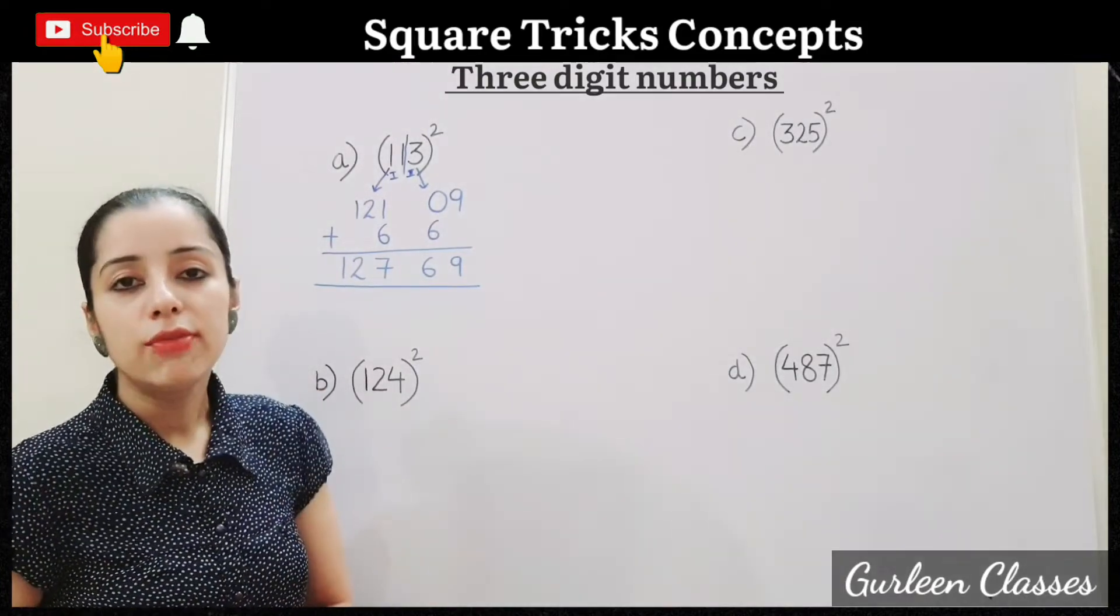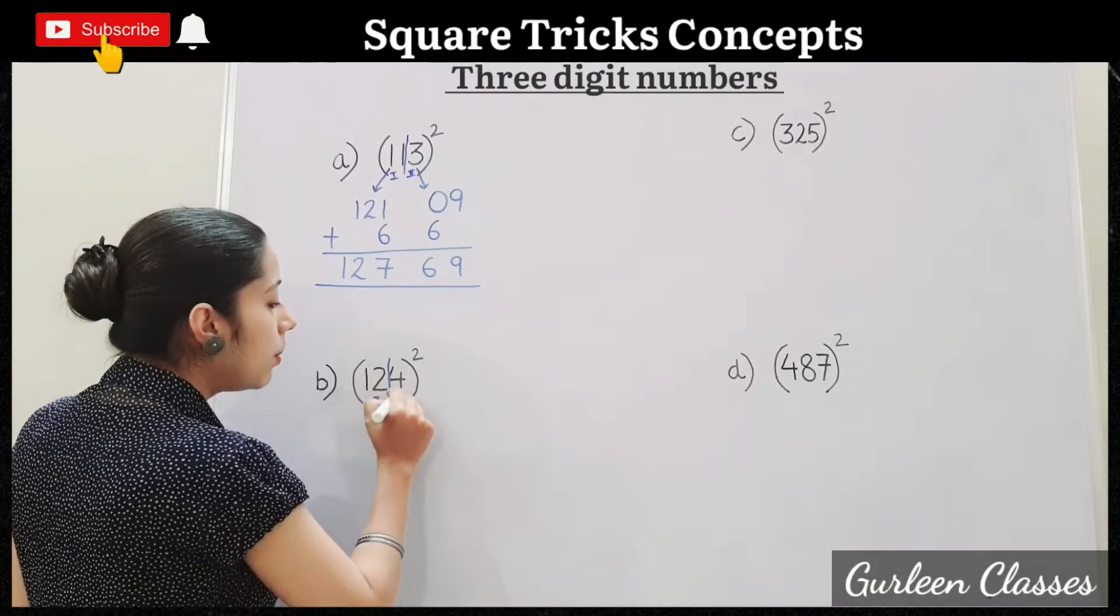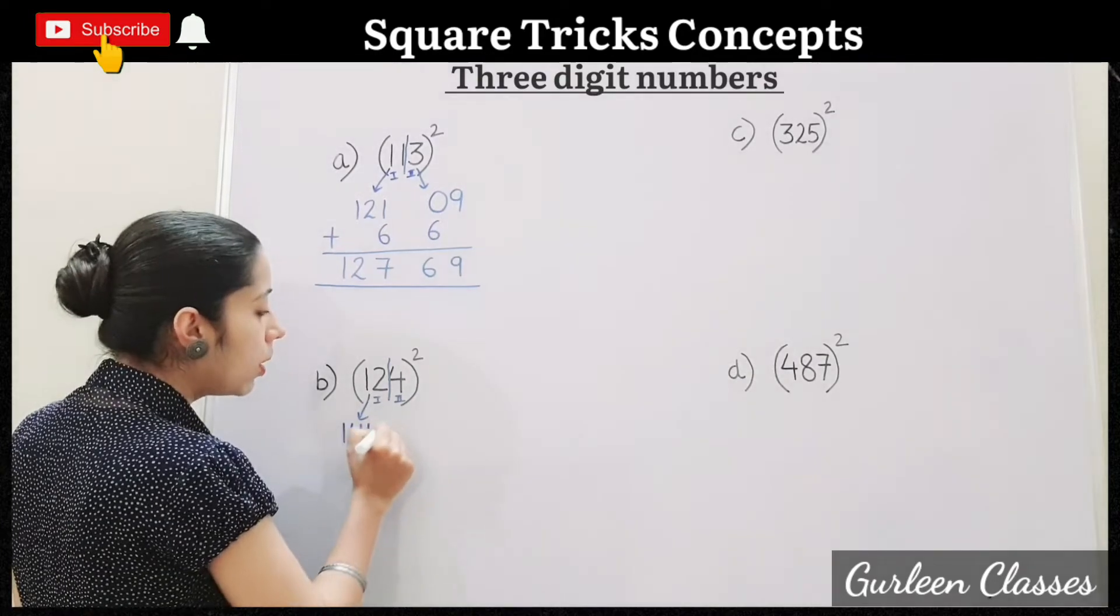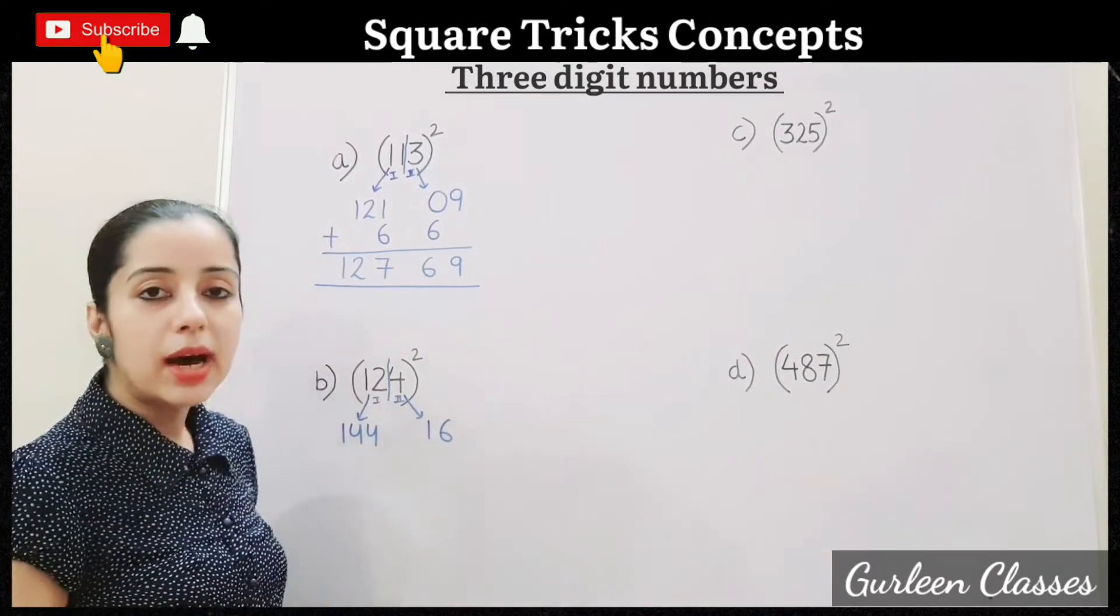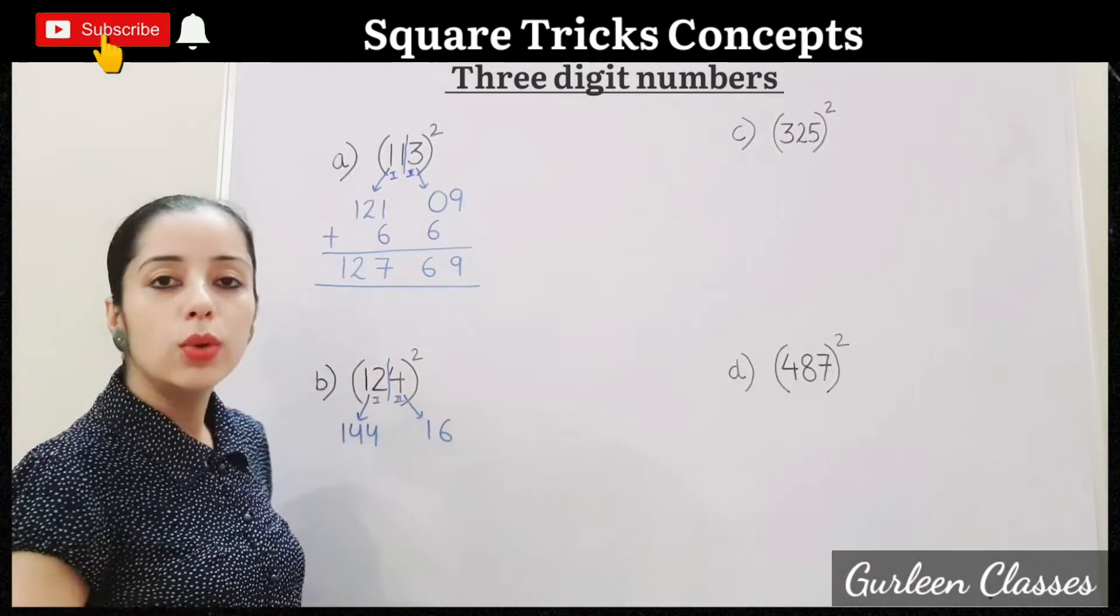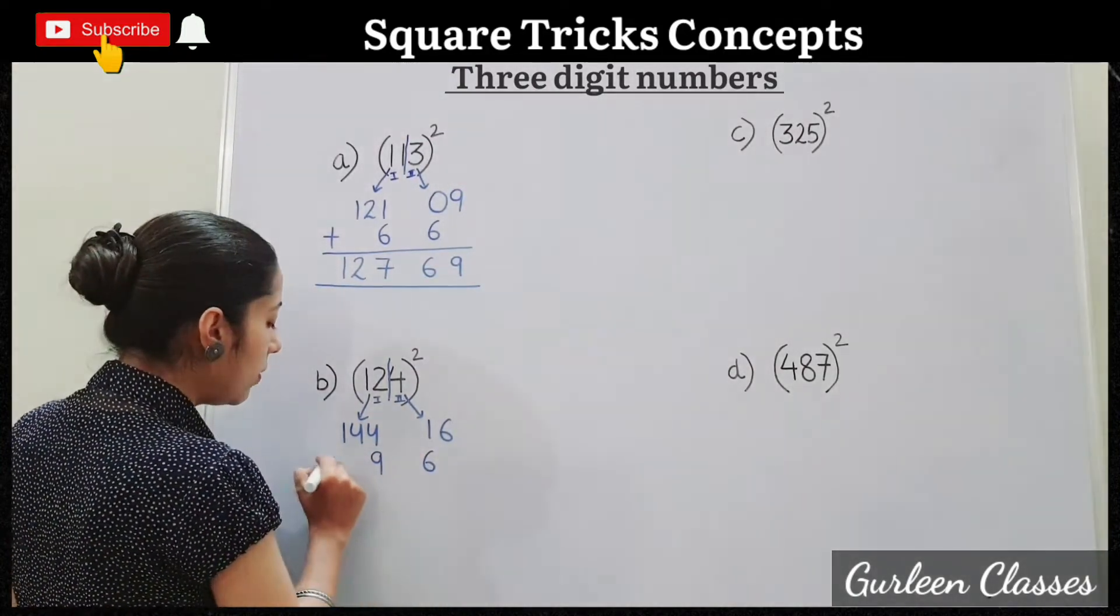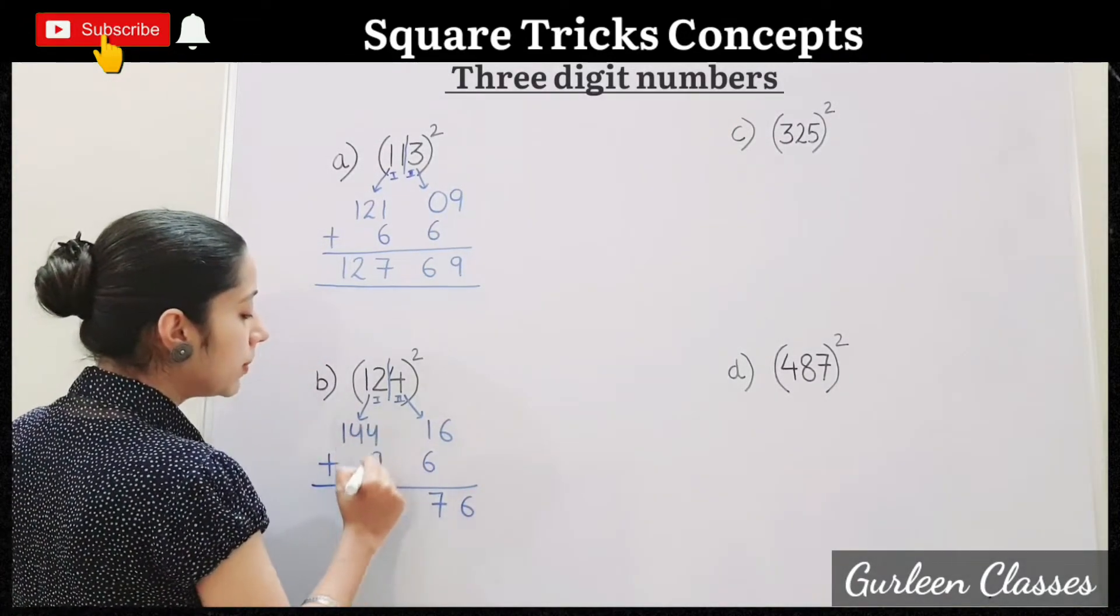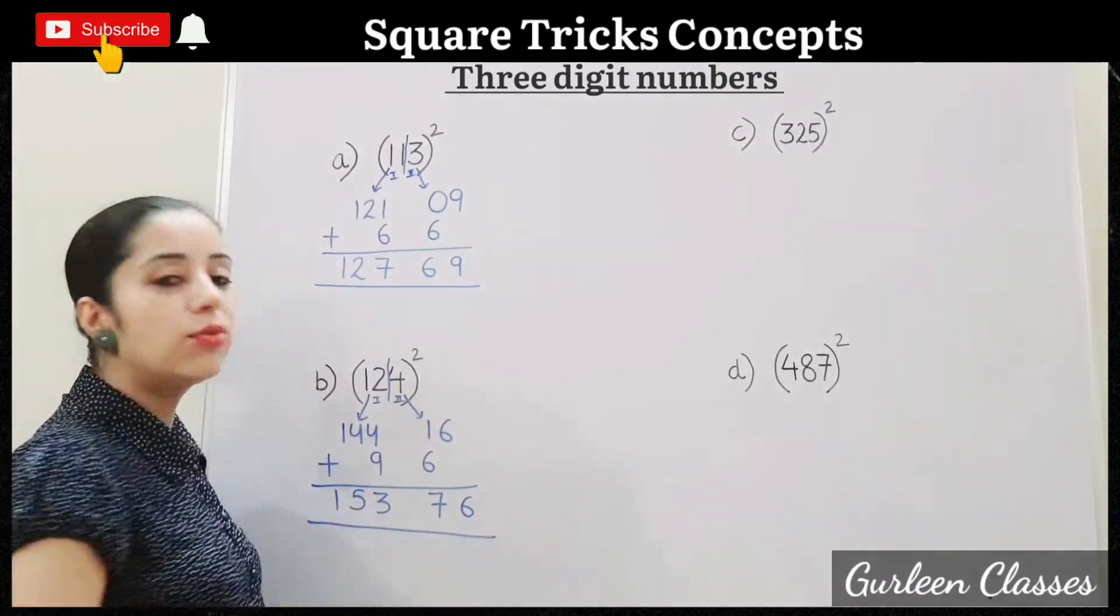B. 124 square. So break the number. 12 will be your first number, 4 will be your second number. 12 square, 12 twelves are 144. 4 square, 4 fours are 16. Second part we will multiply. So 12 fours are 48. 48 into 2, 96. So write here 9, 6. Now we will add 6, 6 plus 1 is 7, 9 plus 4 is 13, 1 carry, 5, 1. Answer is 15,376.